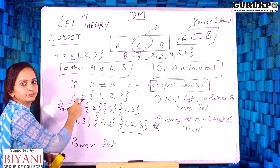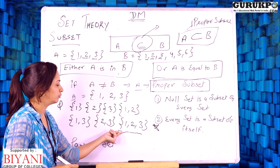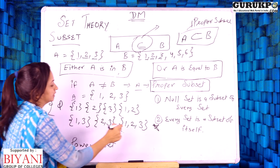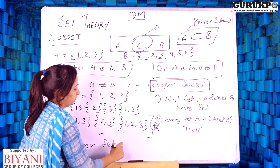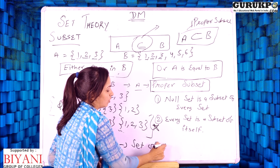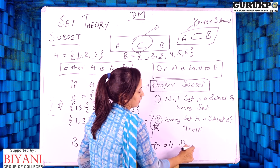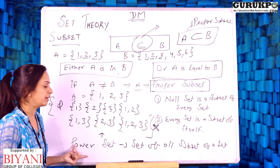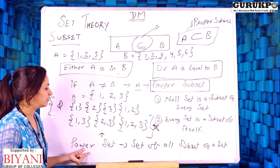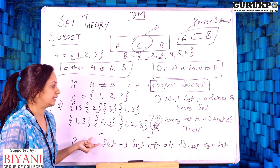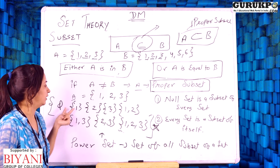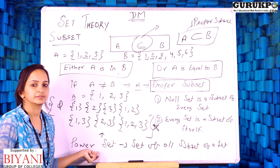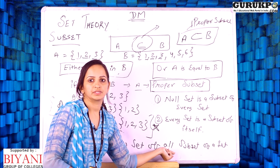If we make a set of all subsets of a given set, that set is called a power set. A power set is the set of all subsets of set A. We take set A, derive all the subsets, and make a complete set — that set is called the power set, generally denoted by the letter P.